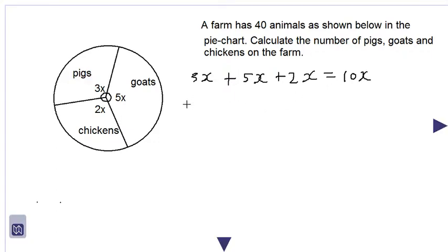The fraction of pigs would be equal to 3x, since pigs is designated by 3x divided by 10x. We cancel the x's and so we get 3 over 10. So the number of pigs.